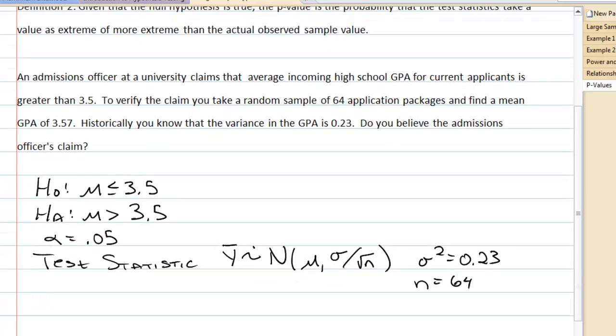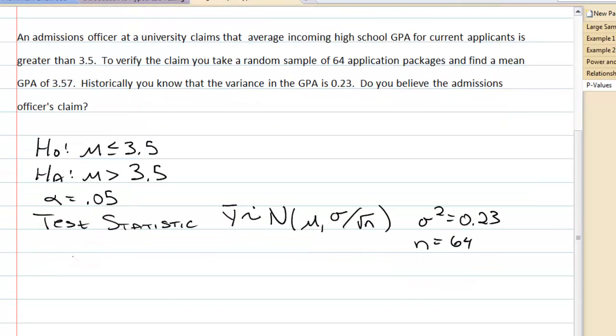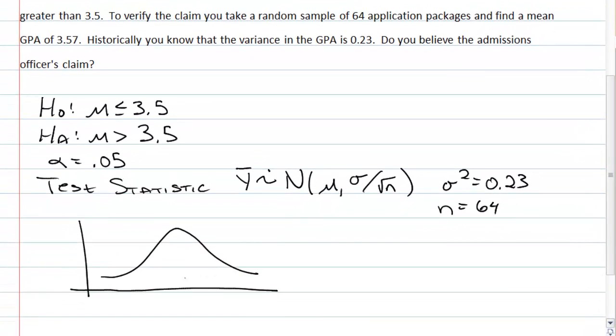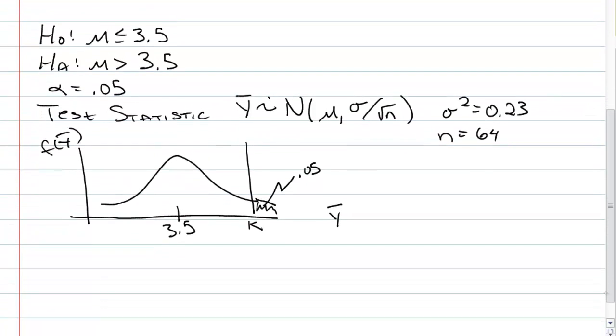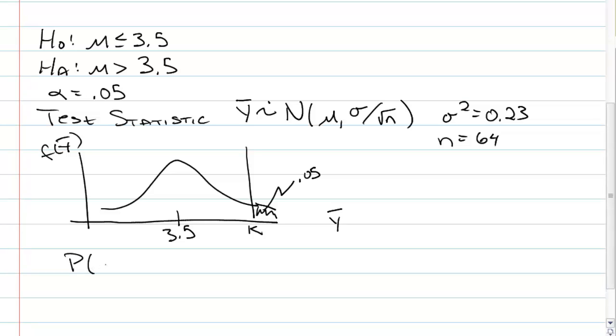What we had done then is we calculated the rejection region. Pictorially, it looked like this, centered at 3.5 under the null. We would reject if we were greater than that. We want to find this k value. This area was alpha, 0.05. And this is the distribution of the random variable y-bar for our test statistic. And we found that by doing a probability calculation.